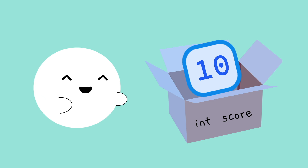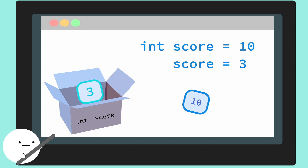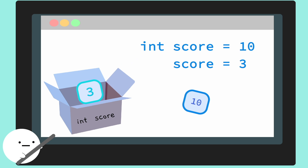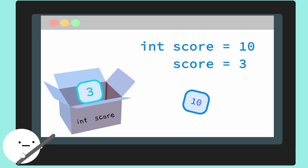Once you declare a variable, there are a lot of ways to use it. Here are a couple examples of how to use them. One thing you can do is change or override values. Here we have a variable named score with an integer data type, meaning it can only hold whole numbers. We'll assign it with a value of 10. We then call the variable to replace its original value of 10 with a new value of 3. And that's it — now score has a value of 3.